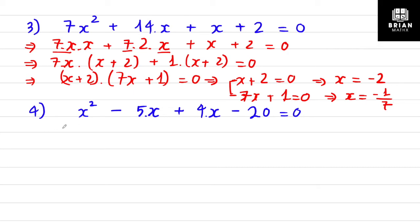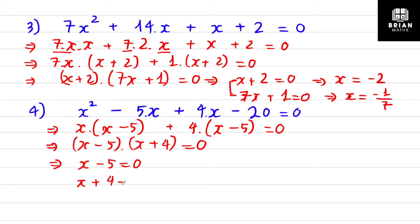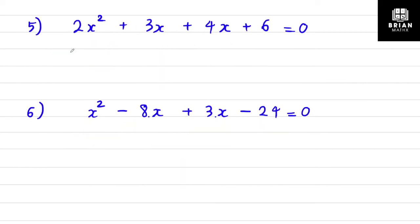Question 4: x outside the bracket, with (x - 5) inside. For the next two terms, 4 is outside with (x - 5), because 20 = 4 times 5. So (x - 5) is the common factor and (x + 4) is the second bracket. Setting each bracket to zero: x = 5 and x = -4.